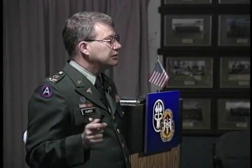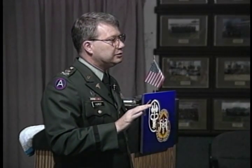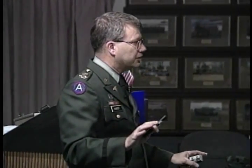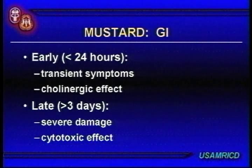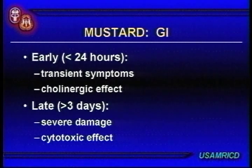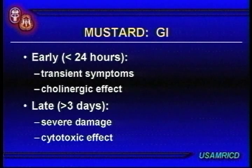In the GI tract, mustard has a poorly understood cholinergic effect — nothing like nerve agent, but early on within 24 hours of a significant exposure you can get bowel cramping, diarrhea, nausea, and vomiting. That's transient. Later, if the white count drops and enough mustard got into circulation and reached the GI tract, it can take out the GI mucosa — you can start vomiting up epithelial surfaces, get hemorrhagic diarrhea. That is the systemic GI effect.